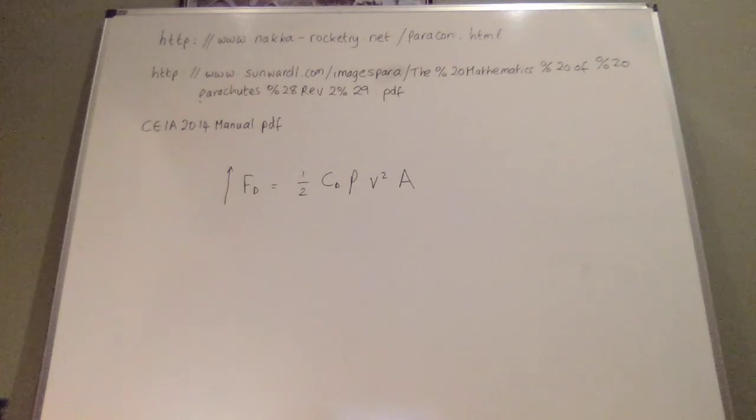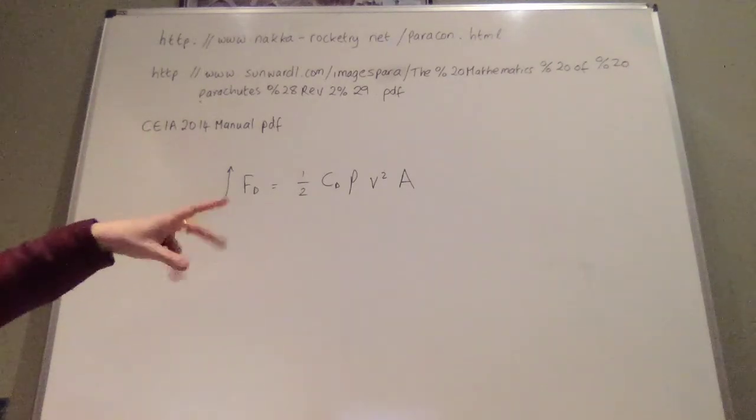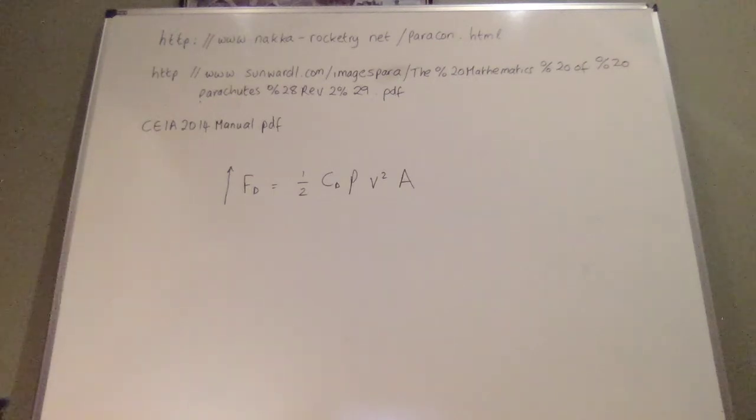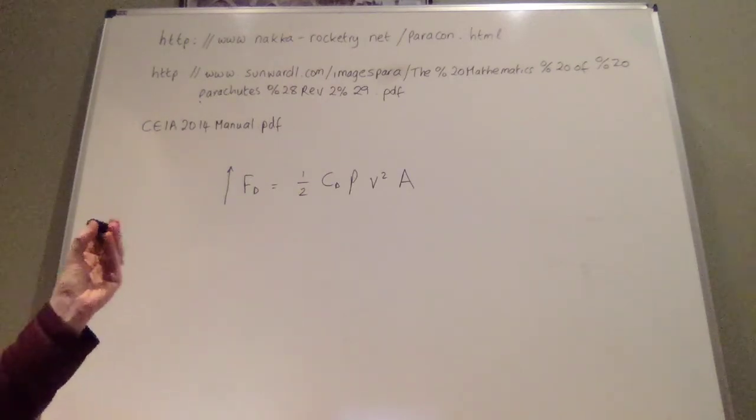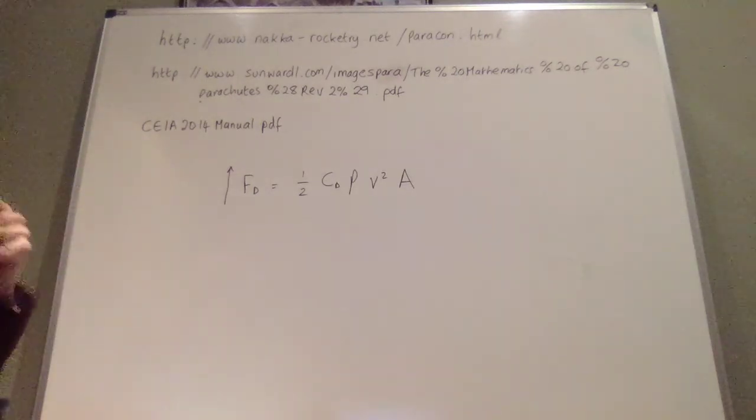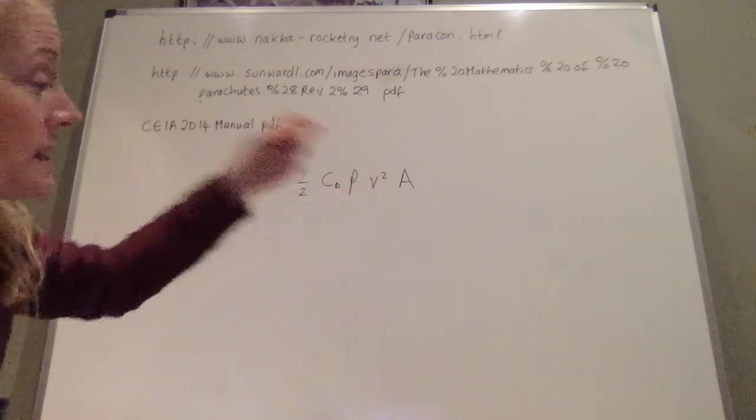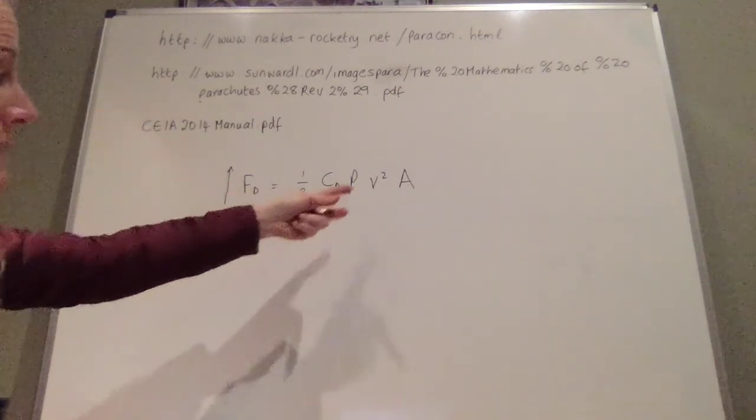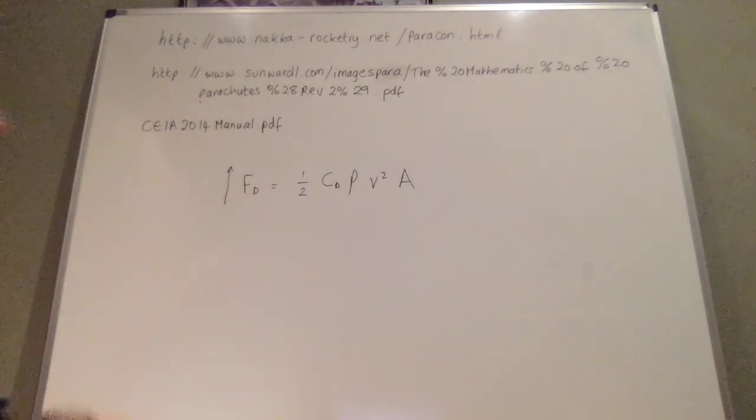The drag coefficient can be affected by the flow of air around the canopy. So that's where the shape of the canopy comes in. And that's probably the shape of the canopy is the most important impact on the drag coefficient. Basically, the surface area of the material is also very important.